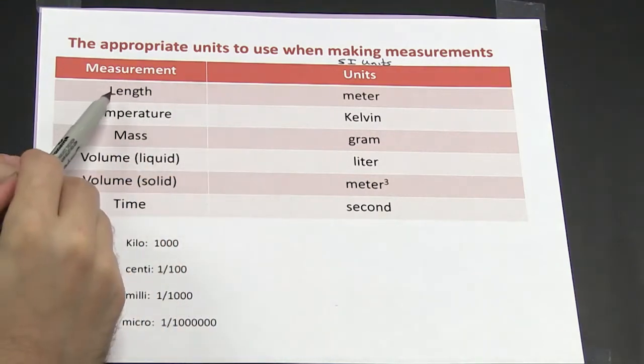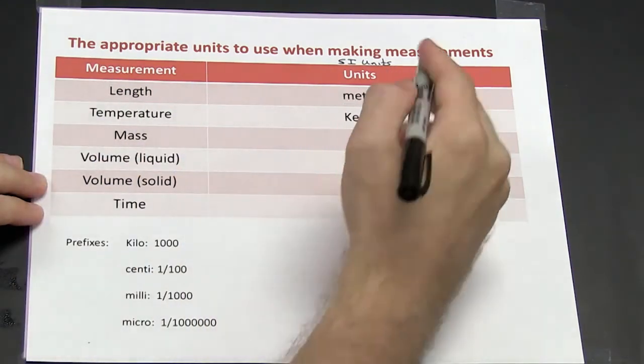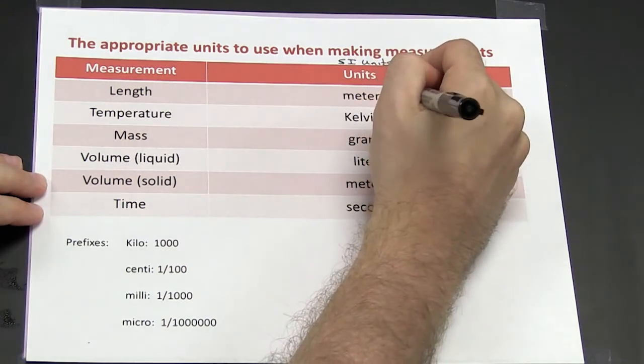When making measurements of length, the unit that should be used is the meter, and the symbol for meter is the little m.